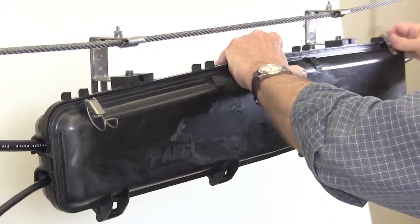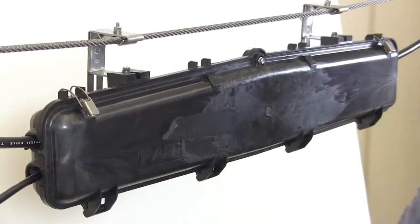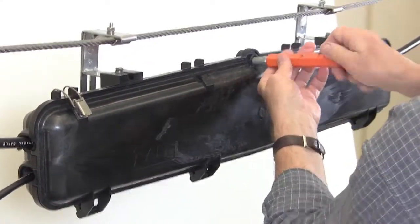Close the closure cover with the snaps at each end and then tighten the security screw.